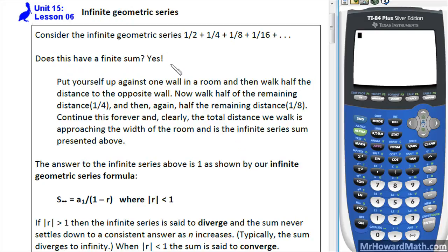The answer is yes, it does. Put yourself up against one wall in a room and then walk half the distance to the opposite wall. Now walk half of the remaining distance, 1/4, and then again, and so forth. Continue this forever and clearly the total distance we walk is approaching the width of the room and is the infinite series sum presented above.